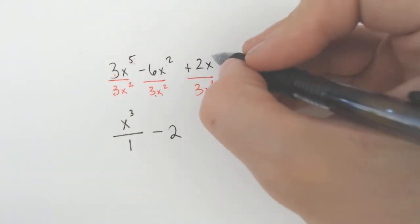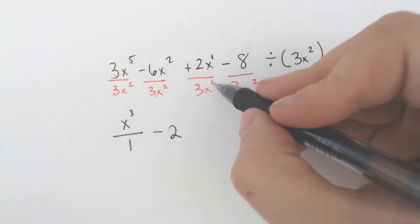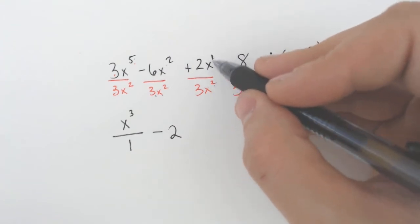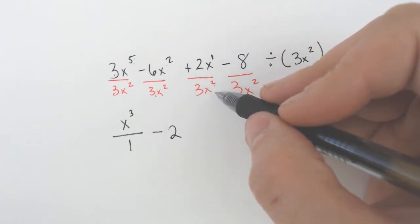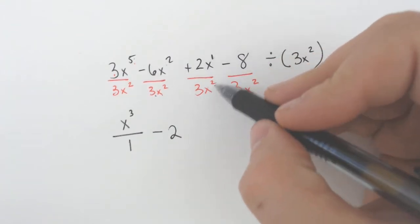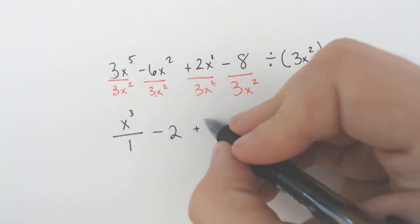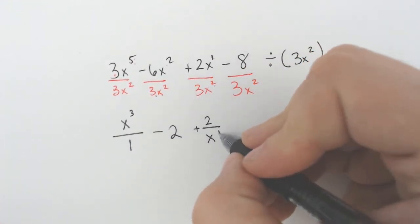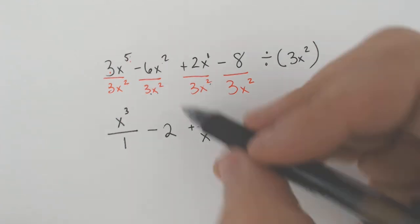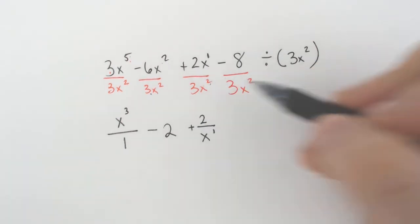And then here, you have an x to the first and an x squared there. If you found the difference between 1 and 2, you would get 1 because 2 minus 1 is 1. But because x squared is bigger, you're going to end up with an x to the first on the bottom of the fraction because the bigger exponent, the bigger x squared, was on the bottom.